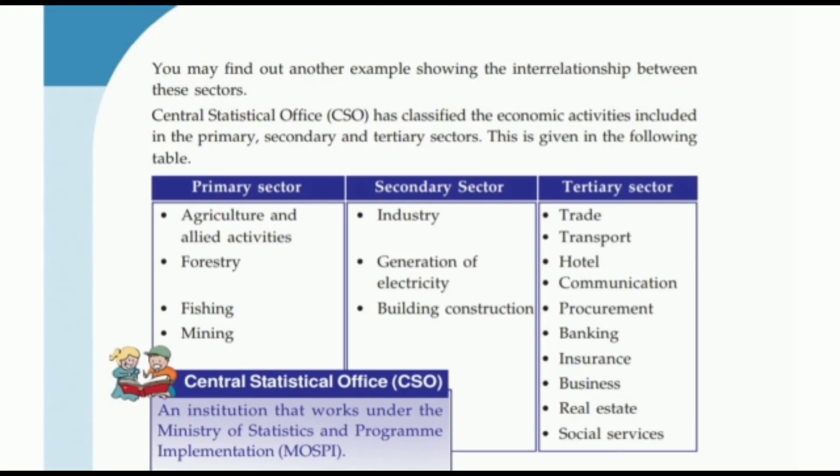On the basis of the classification of primary, secondary, and tertiary sectors, the Central Statistical Office (CSO) has classified all economic activities into the primary, secondary, and tertiary sectors. Our Indian Statistical Office divided all primary activities into these three sectors.